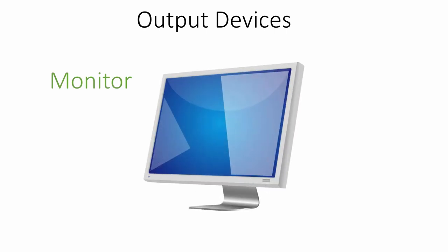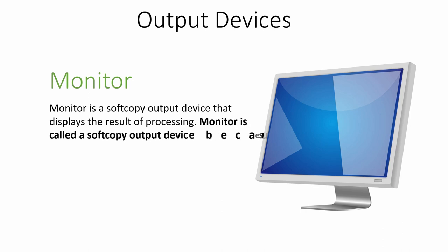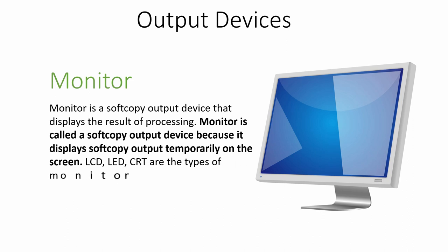Now let me tell you about some output devices, starting with the monitor. The monitor is a soft copy output device that displays the result of processing — whatever result is generated by the CPU is displayed on the monitor. It is called a soft copy output device because it gives temporary output on the screen. There are different types such as LCD, LED, and CRT monitors.